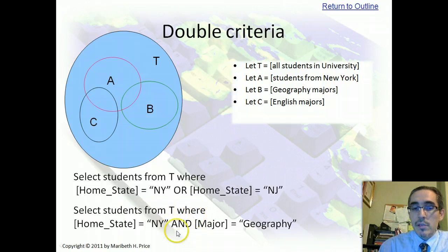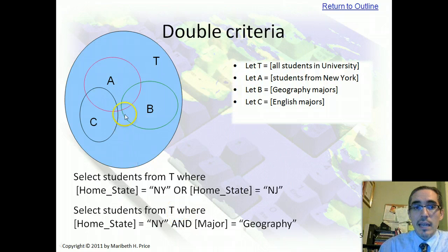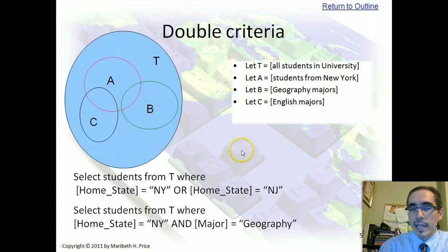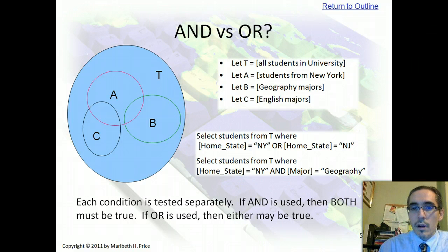With the statement home state equals New York AND major equals geography, because we're using the AND Boolean operator, both sides of the statement have to be true simultaneously. So what we're looking for is an intersection of these two things. If we look at the diagram, the intersection is where these two things overlap — where they're both true simultaneously. It would be just that overlapping space, and all the records that met both criteria would be selected.